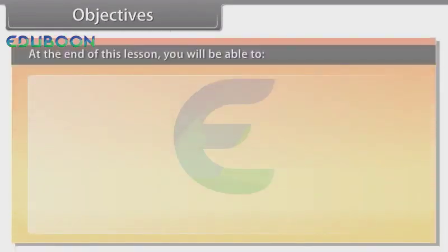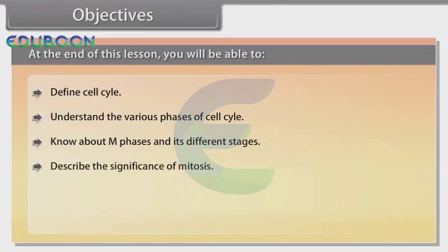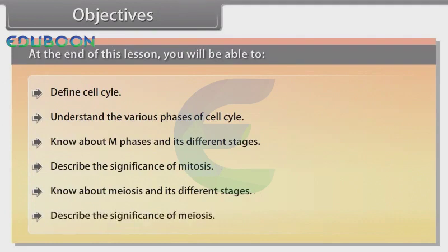At the end of this lesson you will be able to define cell cycle, understand the various phases of cell cycle, know about M phases and its different stages, describe the significance of mitosis, know about meiosis and its different stages, and describe the significance of meiosis.